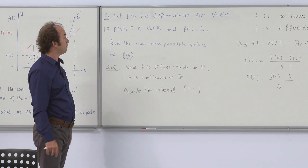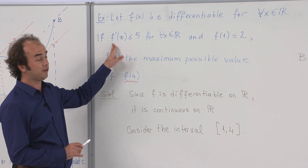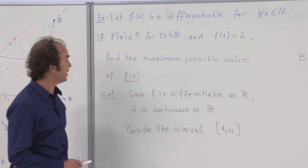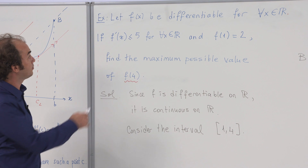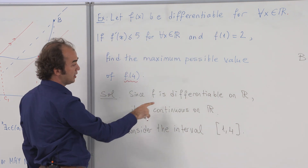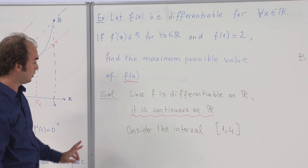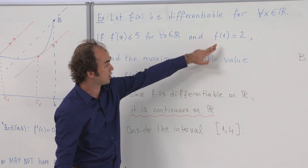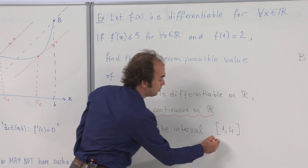The next question to solve using the mean value theorem: let f(x) be a differentiable function for every x in the real numbers. If the derivative of f at every x is not greater than 5, and if f(1) = 2, find the maximum value f can assume at the point 4. Since f is differentiable everywhere, it is also continuous on ℝ. Now consider the interval [1, 4] — the 1 comes from the given value f(1) and we are asked about the value at 4.